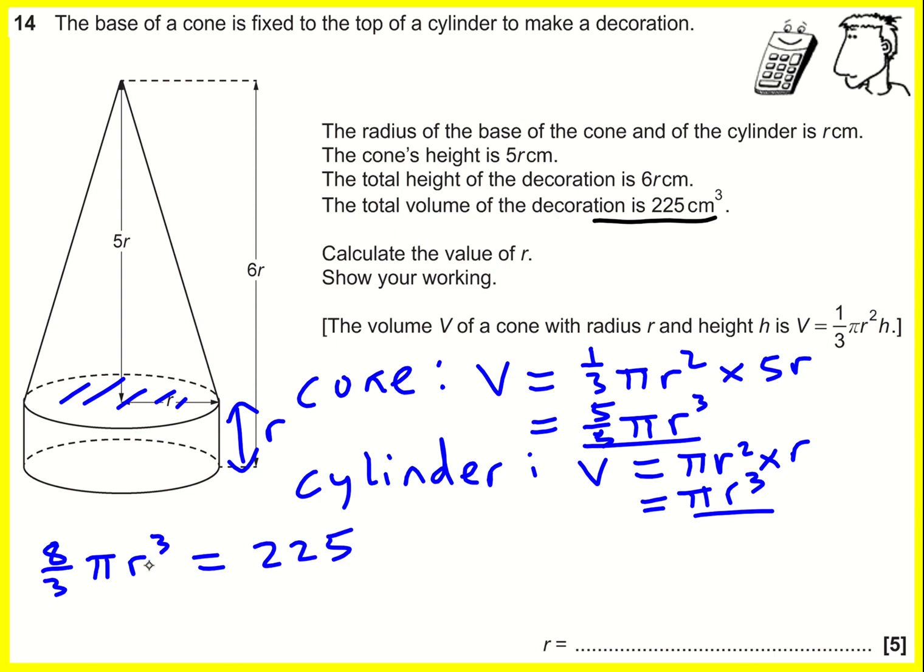I can rearrange this now, so I can times through by 3, let's do it step by step. 8π r³ is going to be, I'm not going to work this out yet, 3 times 225, and I can divide through by 8π in one go. So then finally r is going to be the cube root of that, and I've done it like this because I'm just going to put this straight into my calculator.